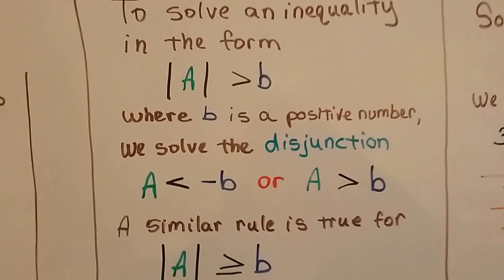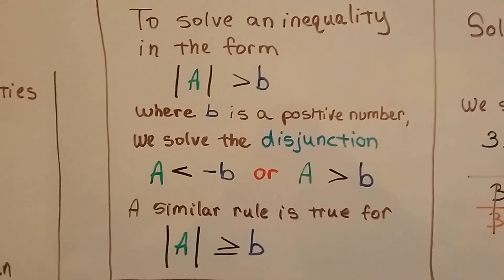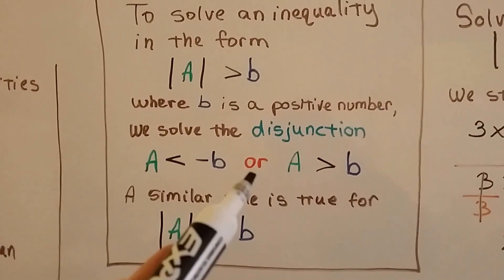So, to solve an inequality in the form the absolute value of a is greater than b, where b is a positive number, we solve the disjunction. Disjunction is or.